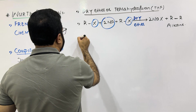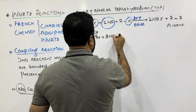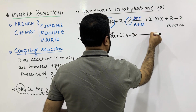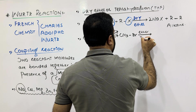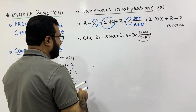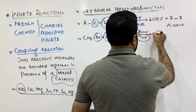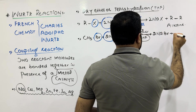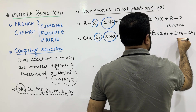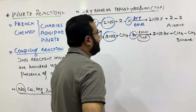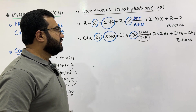Let us take an example in which two methyl bromide molecules react together in the presence of dry ether or tetrahydrofuran. The two sodium atoms will join with the two bromine atoms and you will get two NaBr, and these two methyl groups will join together to form an alkane — that is ethane. So this is an example of methyl bromide reacting with sodium to form ethane.